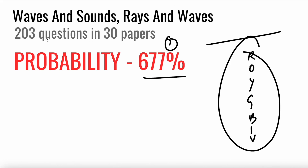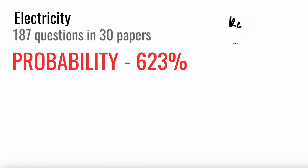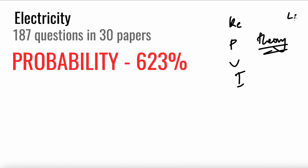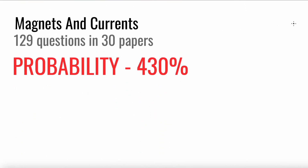For Electricity, you'll be asked to find resistance, power, voltage, and current. They give you a circuit and you find different currents and voltages. There could also be theoretical questions — is this an LDR, a thermistor, or a variable resistor? Around six questions are expected, and this topic also appears towards the end of the paper.